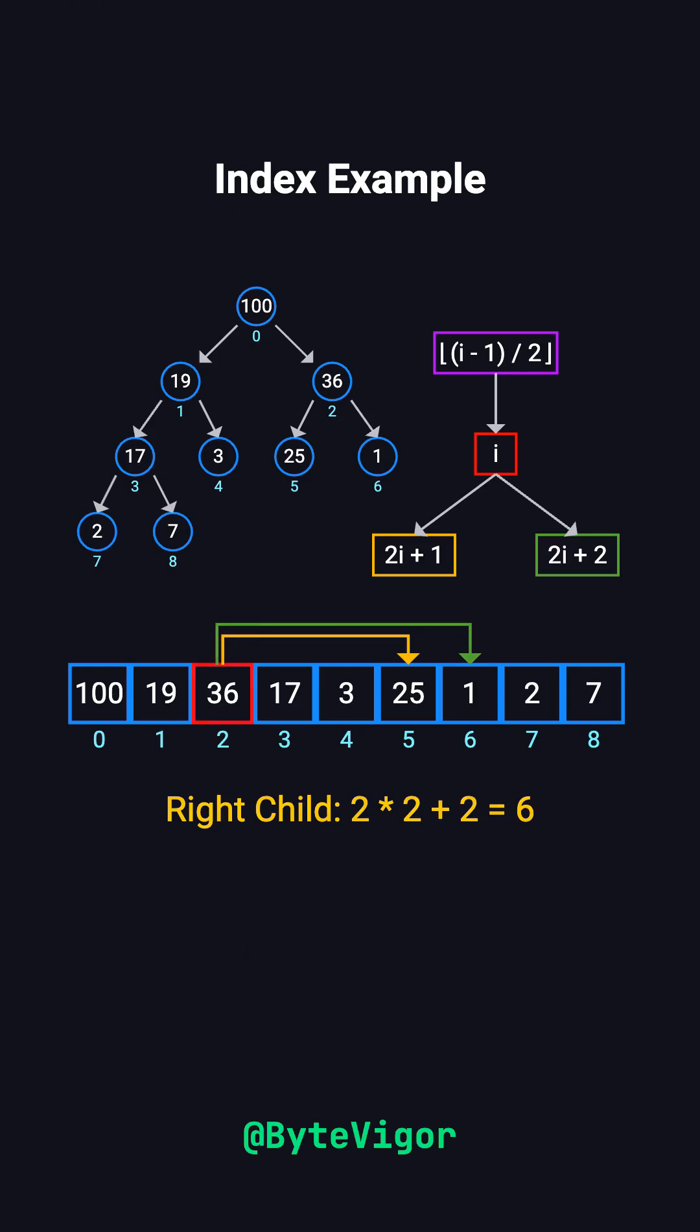To find the parent of a node, let's take node 17 at index 3. Its parent is at 3 minus 1 divided by 2, which equals 1, holding the value 19.